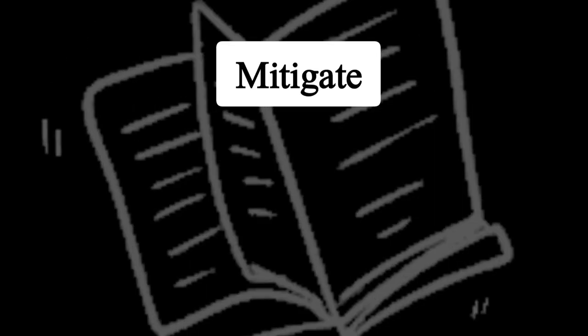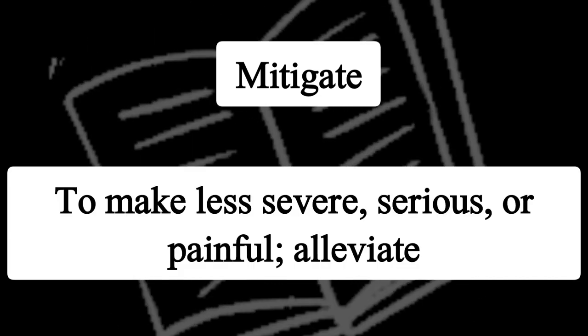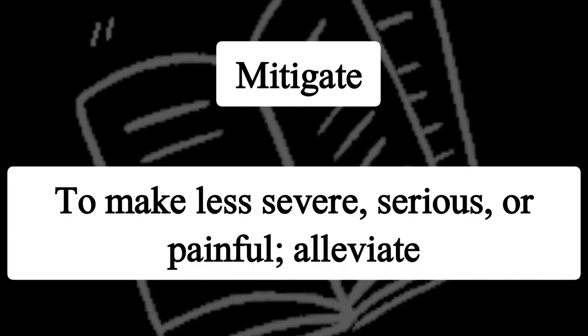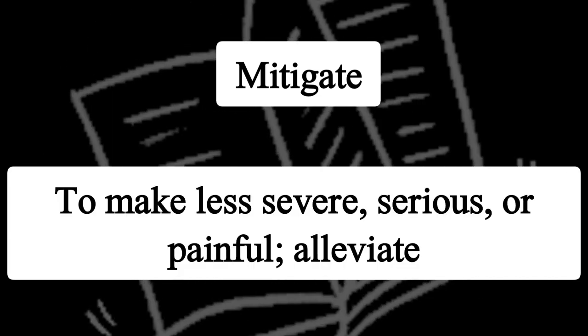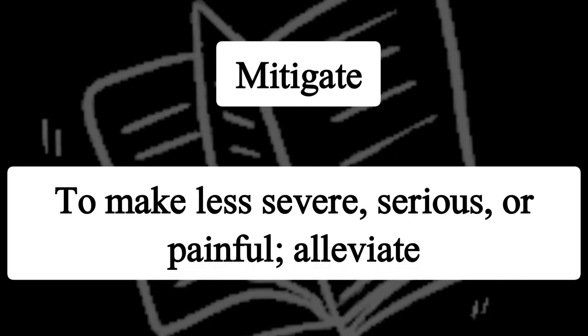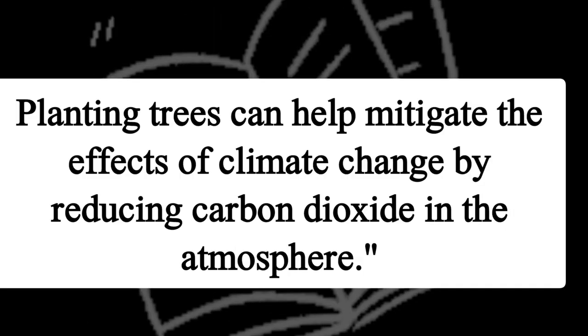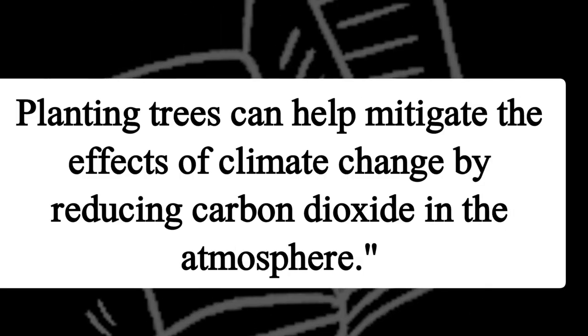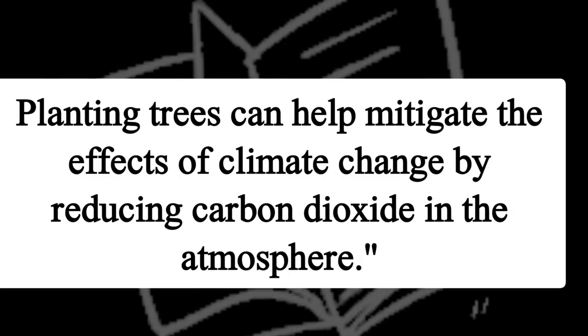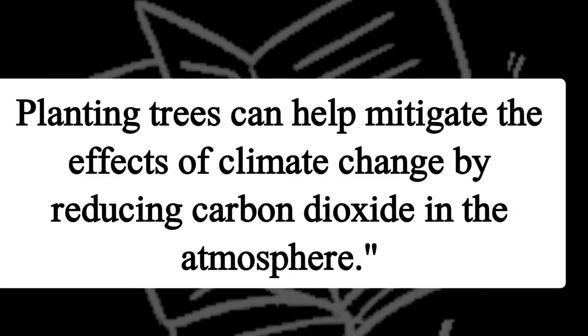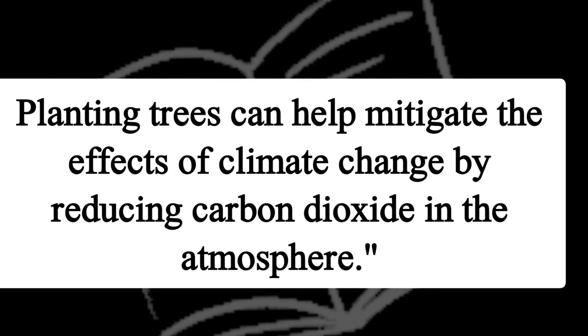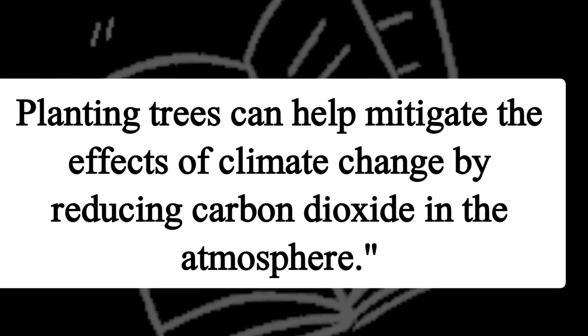Next, mitigate. What do you think it means? Iska matlab hai kisi cheez ki severity, uski seriousness ko kam kar dena. For example, paudhe lagane se hum climate change ki jo effects hai, unhein thoda kam kar sakte hai.